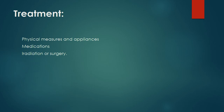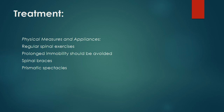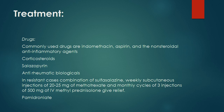Treatment: The modalities of treatment include physical measures and appliances, medications, irradiation, or surgery. Regular spinal exercises help to correct postural abnormalities and strengthen the spinal ligaments and paraspinal muscles. Prolonged immobility tends to accelerate ankylosis and should be avoided. Spinal braces help to correct postural defects partly. Prismatic spectacles enable the patient with severe kyphosis to see objects in front. Commonly used drugs are indomethacin, aspirin, and nonsteroidal anti-inflammatory agents.